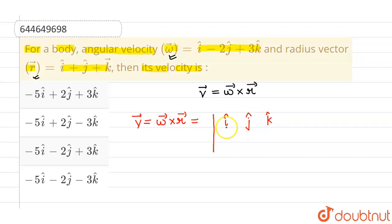And the second row will be filled by components of omega vector. So components are 1, minus 2, and 3 along i, j, and k cap respectively. And the components of r vector are 1, 1, 1 along i, j, and k cap. So this row will be filled by 1, 1, 1.